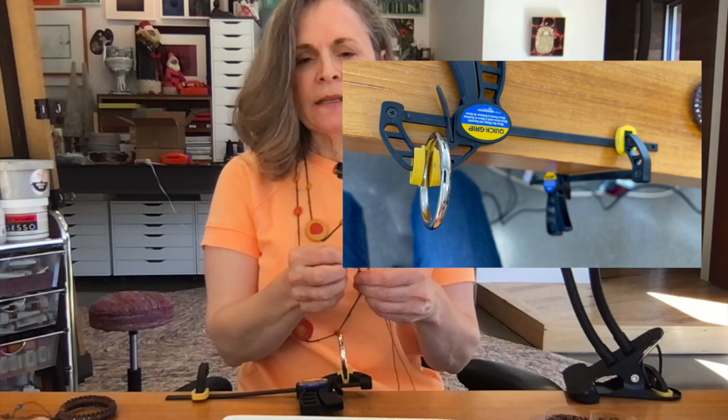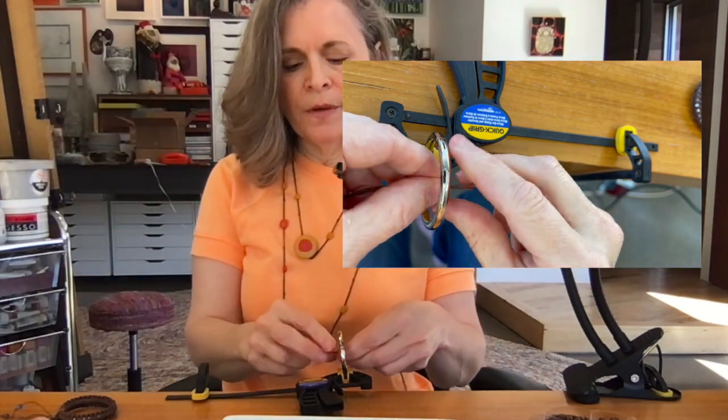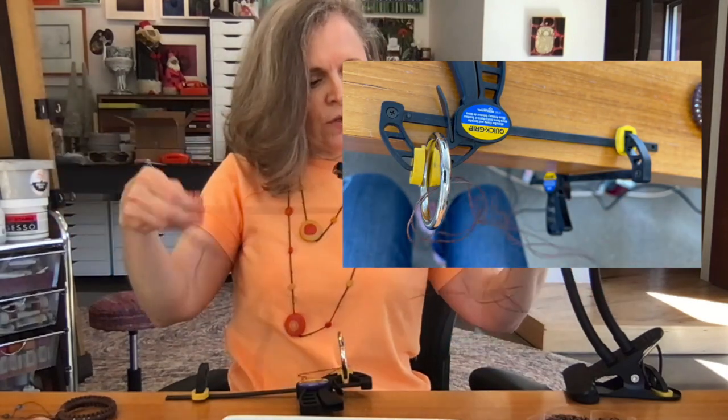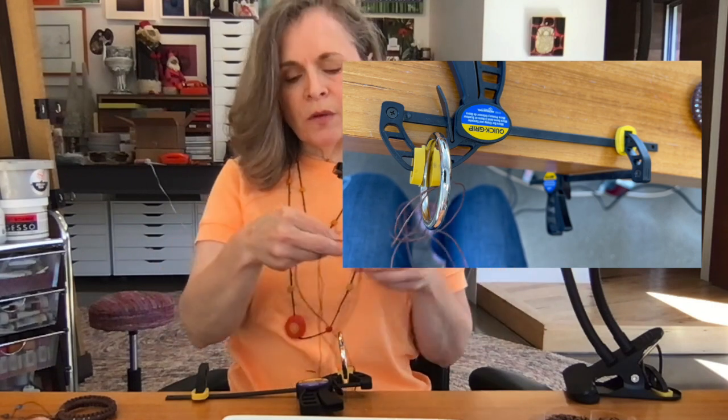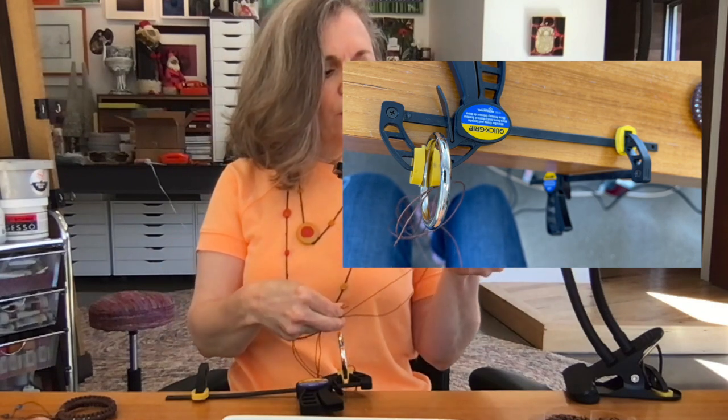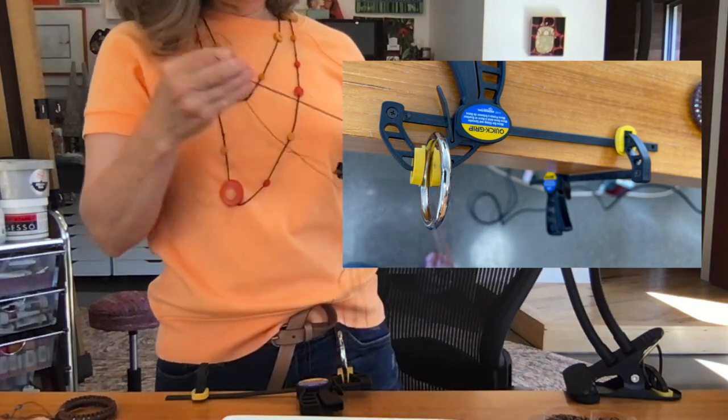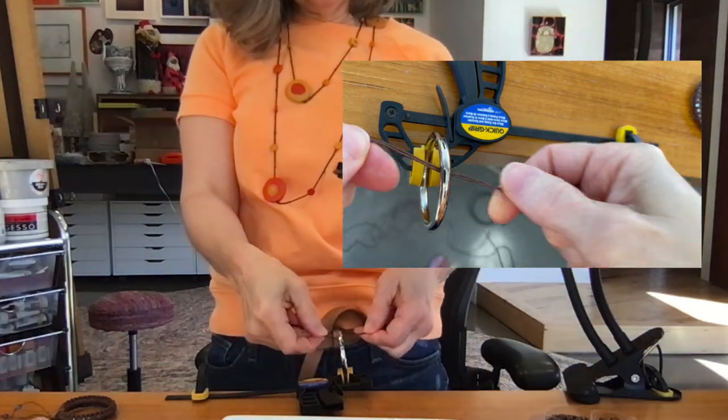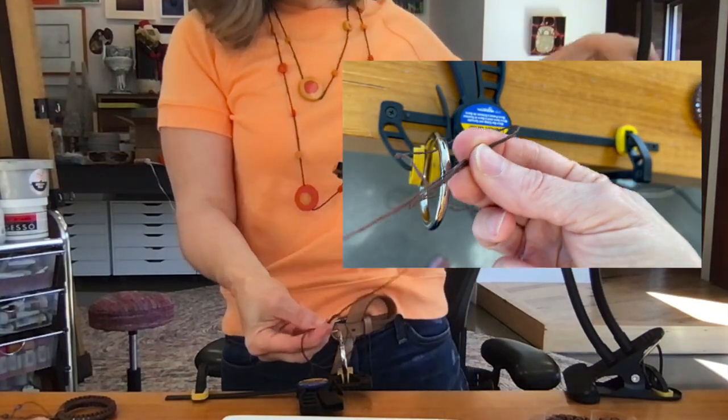You'll take six yards of the waxed hemp, cut it in half. You'll use two three-yard pieces to knot onto the welded O-ring. I'm going to find the center of that string and tie it to the O-ring, just a single knot.